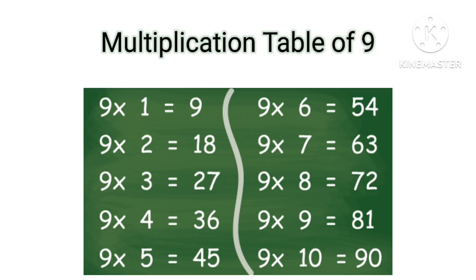Table of 9: 9×1=9, 9×2=18, 9×3=27, 9×4=36, 9×5=45, 9×6=54, 9×7=63, 9×8=72, 9×9=81, 9×10=90.